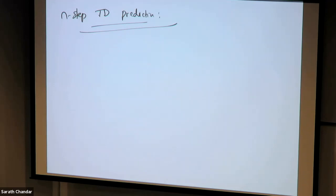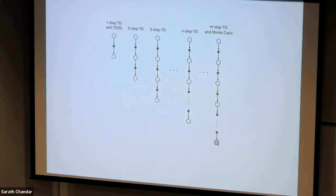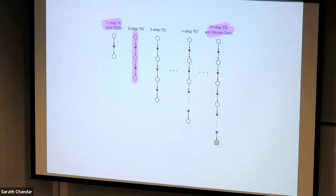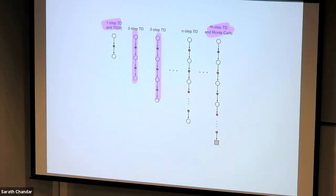Here is how different n-step methods look for state value estimation. In one extreme you have one-step TD — from the current state it takes an action, goes to the next state and updates. In the other extreme you have Monte Carlo, which can also be treated as infinite-step TD because you go all the way to the end of the episode. In between you have interesting algorithms like two-step TD, which takes first action, second action — you get two rewards, and for the rest you estimate using your value function. Three-step TD unrolls for three steps then makes the approximation. If you unroll all steps, there is no approximation — that is Monte Carlo. These n-step methods are still TD methods because they still have some estimate of the future state.